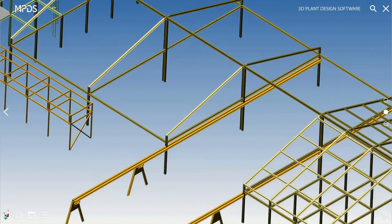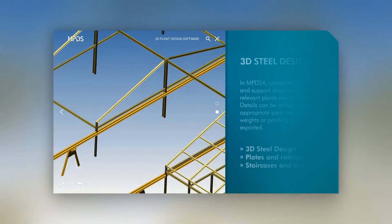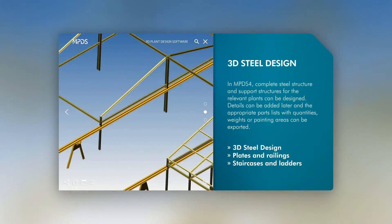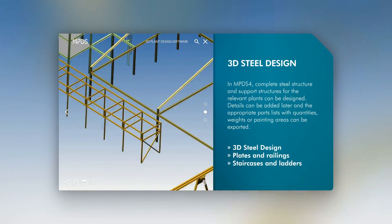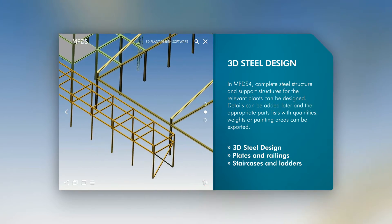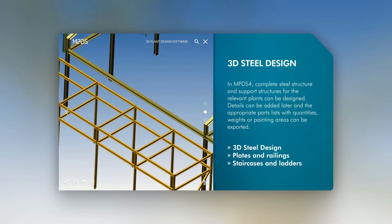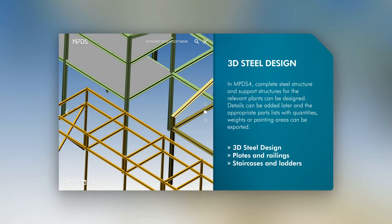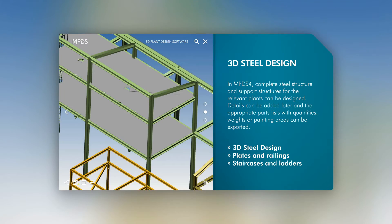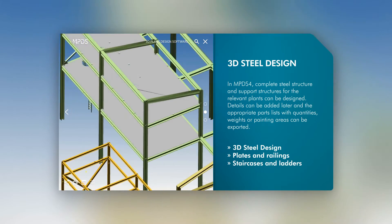Build complete steel and support structures with MPDS-4. Detailing can be done later, and appropriate parts lists, numbering, weights, and paint surface information can be exported.